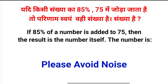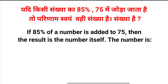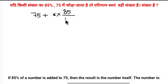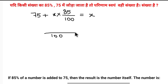The question is: a number is added to 75, then the result is the number itself. The number is 100, and 85% of x is equal to x, where 75 plus 85x is equal to x.